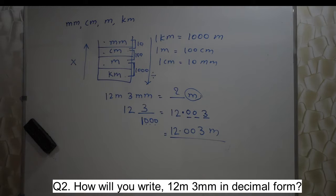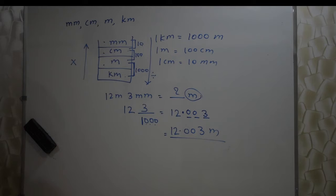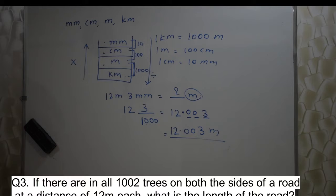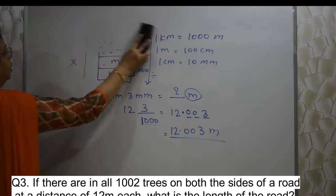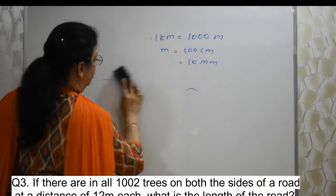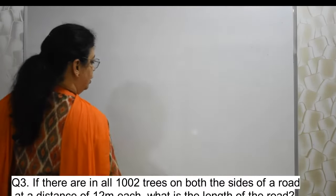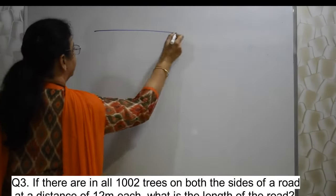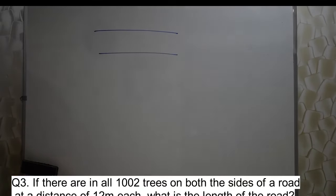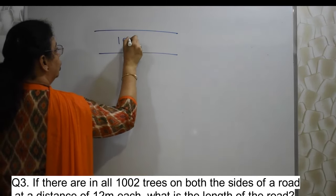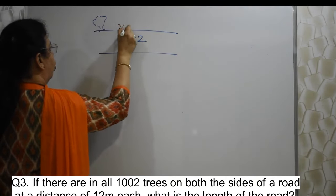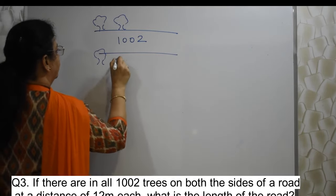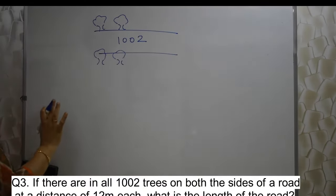Let's go ahead. Next sum. If there are in all 1002 trees on both the sides of a road at a distance of 12 meter each, what is the length of the road? See student, this is one of my favorite sums. We always see we should plant trees. Isn't it? So this is a tree plantation sum. We have a road. We need to find out the length of the road. Road is there. We don't know how long it is. But we need to plant trees which they have already done. How many trees are there? 1002 trees on both the sides. On both the sides, here also and here also, same distance, same, one opposite another.